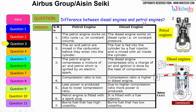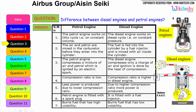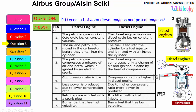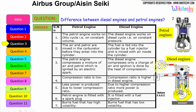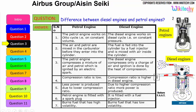Let us see the difference between the diesel engine and the petrol engine. The petrol engine works on the Otto cycle, therefore on constant volume, whereas the diesel engine works on the diesel cycle on constant pressure. The air and the petrol are mixed in the carburetor before they enter into the cylinder, whereas in diesel, the fuel is fed into the cylinder by a fuel injector and is mixed with air inside the cylinder. The petrol engine compresses a mixture of air and petrol which is ignited by an electrical spark.